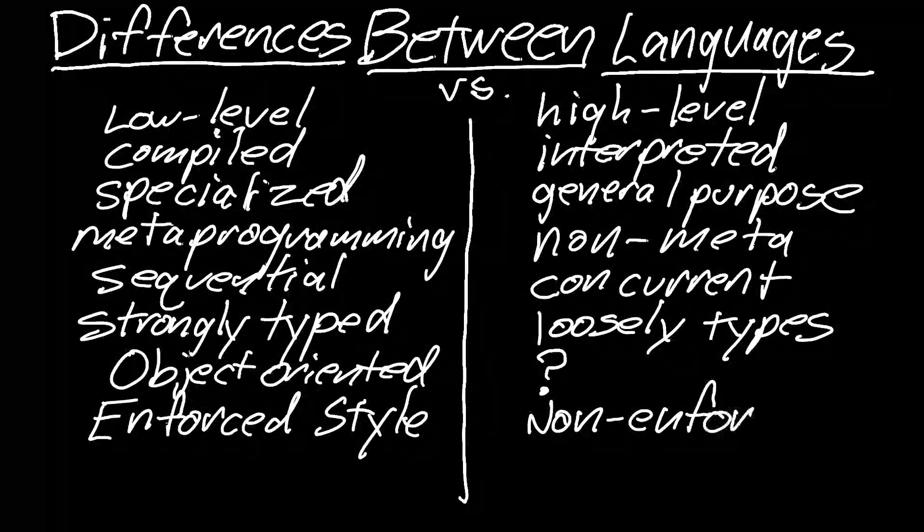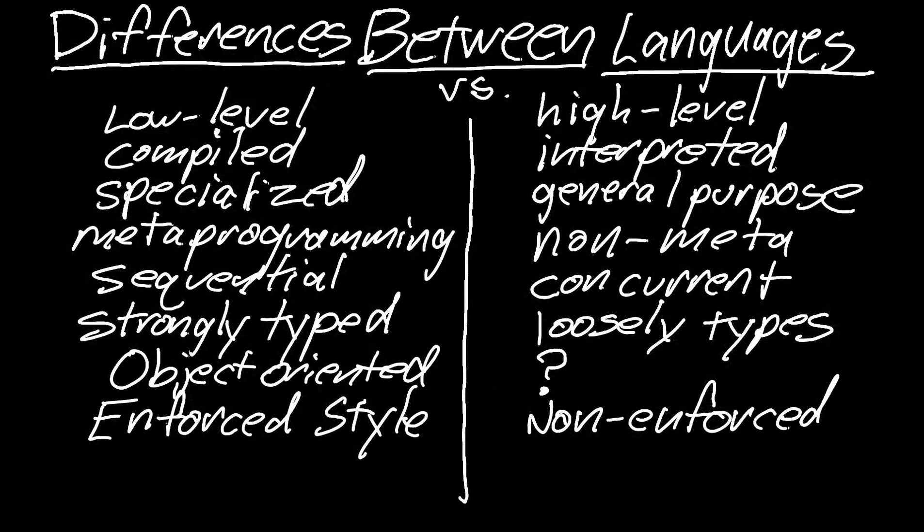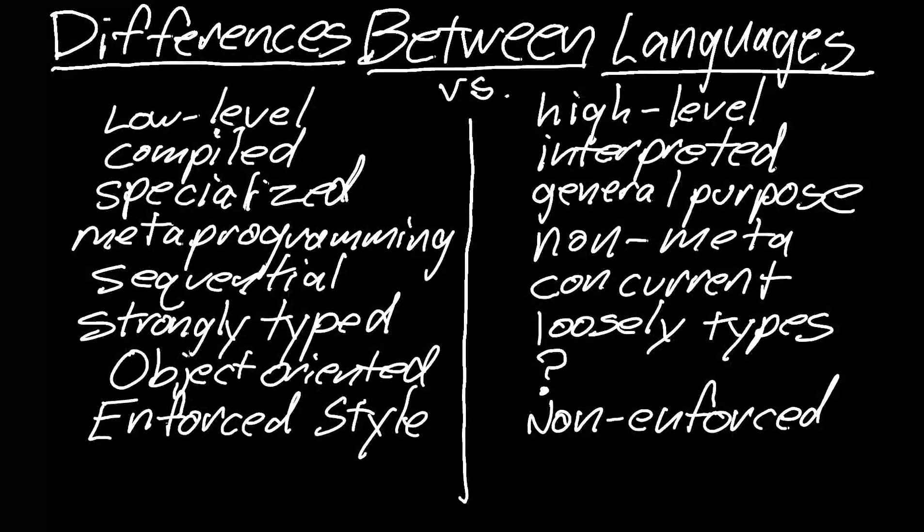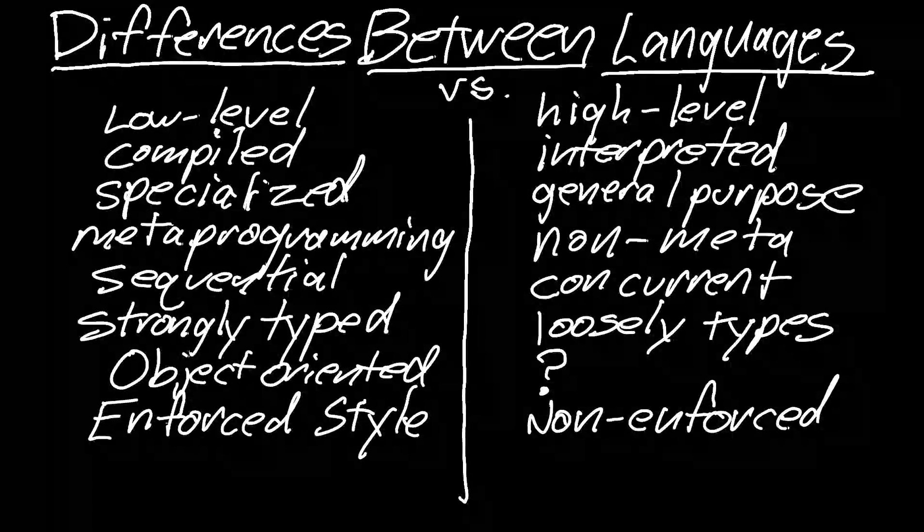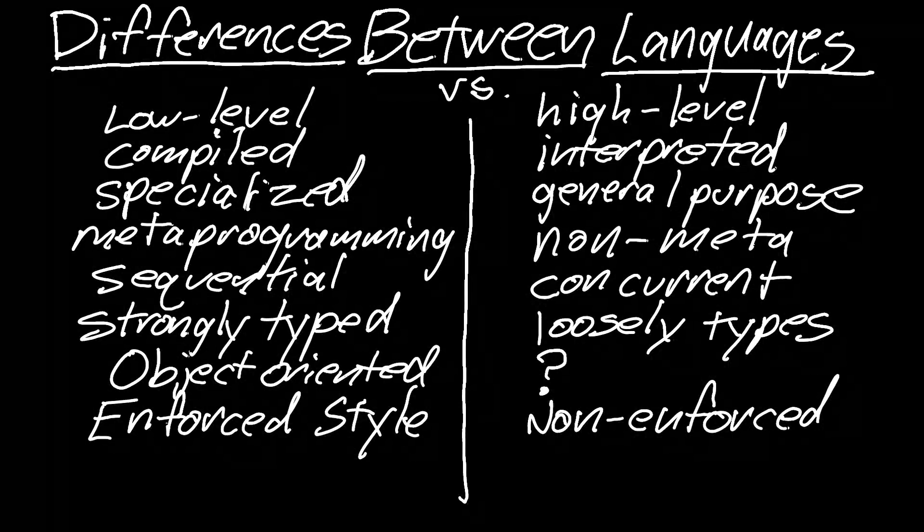And for someone who doesn't program yet, it's a little difficult to grasp, but object oriented was a very popular trend in recent years. And it caused a revolution in programming and it allowed a certain class of programs to be created that were very difficult before because code is a lot easier to manage.